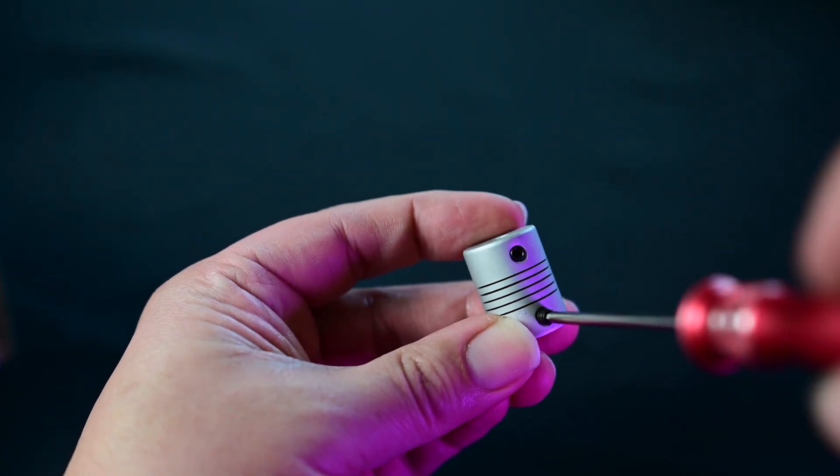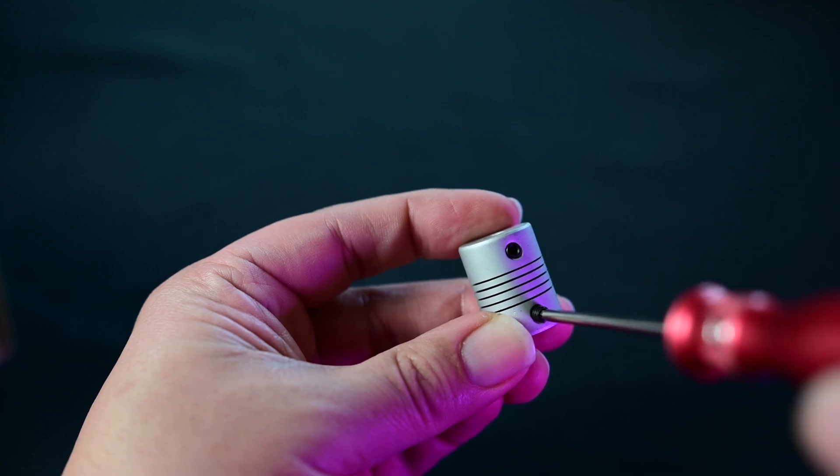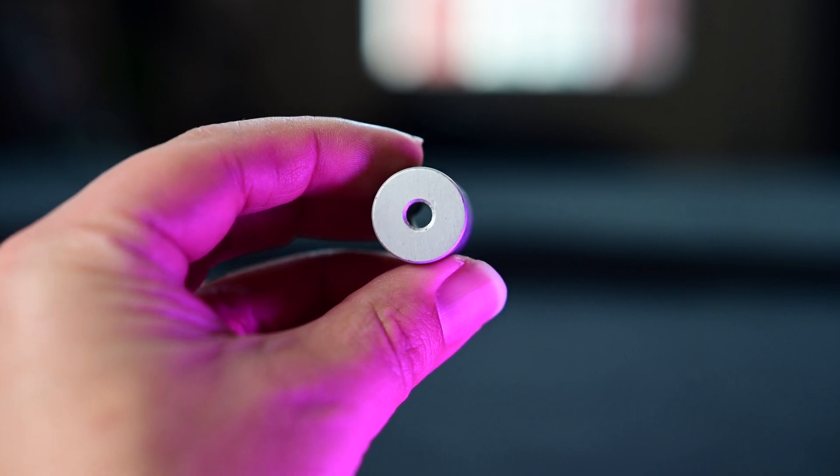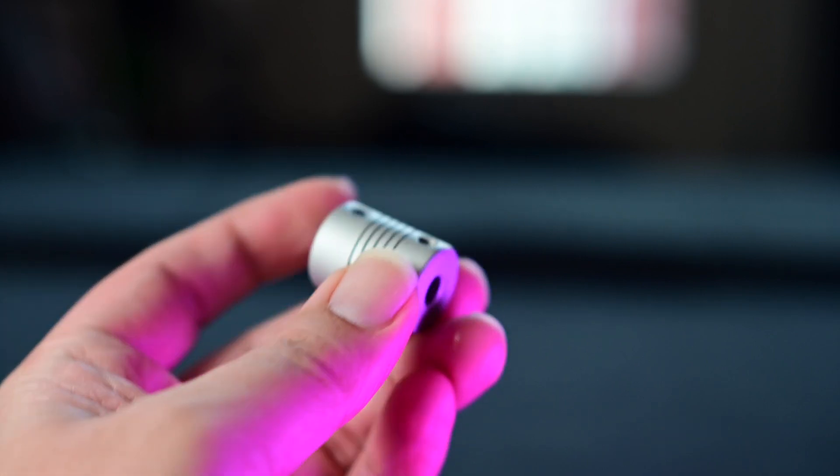Next, go ahead and install the grub screws into the coupling. Just make sure that they're in, you don't have to tighten them all the way, just make sure they're just in the coupling itself.